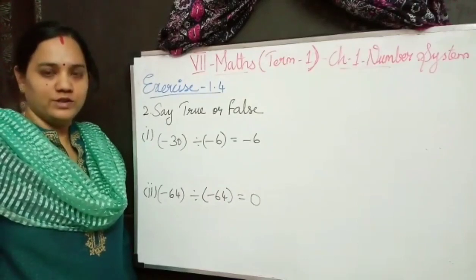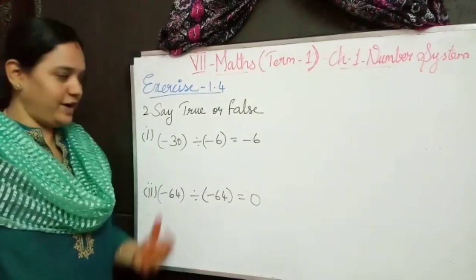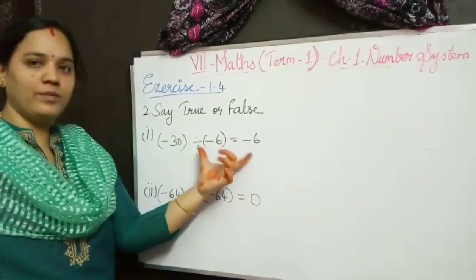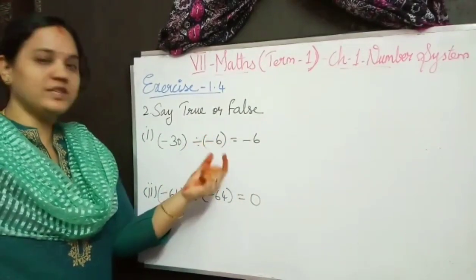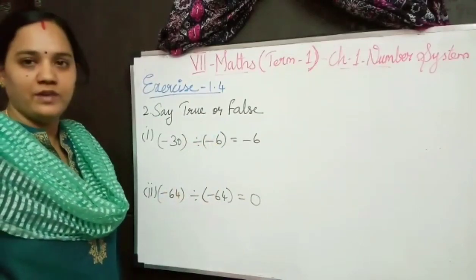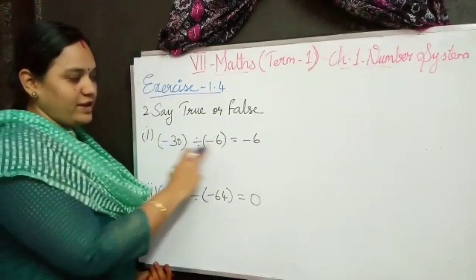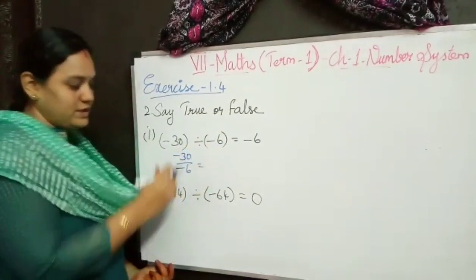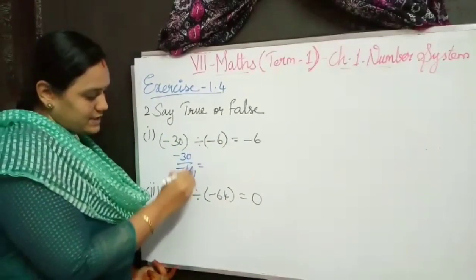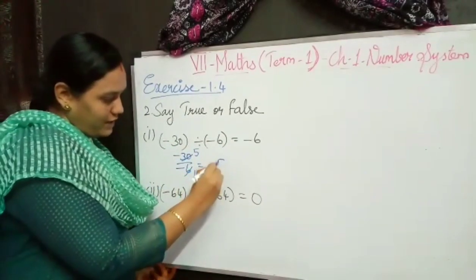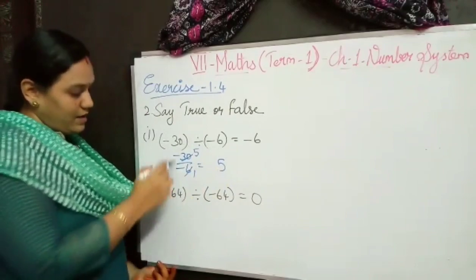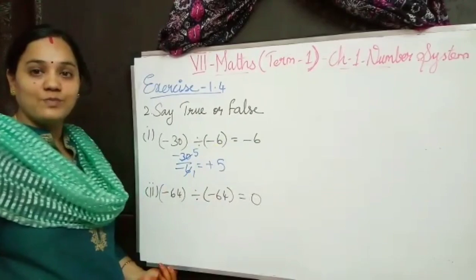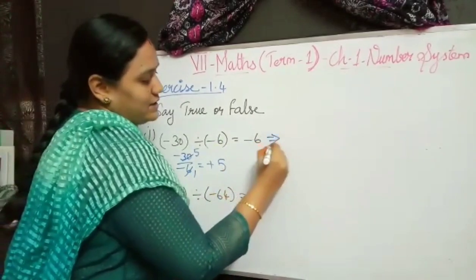The second problem is true or false. We have to find out whether the left hand side equals the right hand side. If equal, we say true; if not equal, we say false. For minus 30 divided by minus 6: 5 sixes are 30, so the answer is 5, and same sign means plus. But the answer given is minus 6, so this is false.